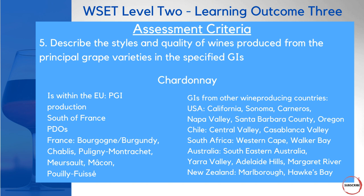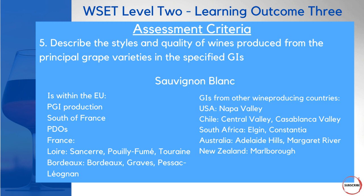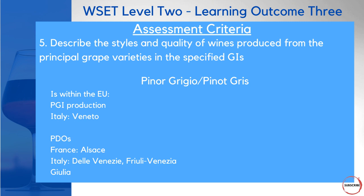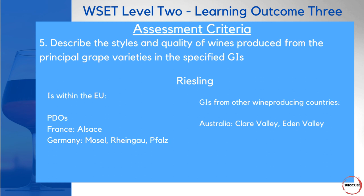For Sauvignon Blanc, the regions are the Loire Valley and Bordeaux within France, plus USA, Chile, South Africa, Australia, and New Zealand. For Pinot Grigio/Pinot Gris, the Veneto in Italy is covered as a broader area, plus Alsace in France and some specific Italian regions. For Riesling, within France it's Alsace, then specific regions in Germany, and worldwide only Australia's Clare Valley and Eden Valley are covered. WSET level two questions will only cover regions captured in the syllabus.